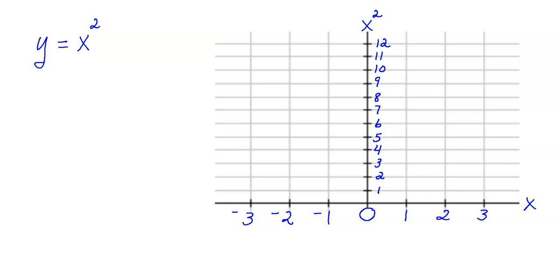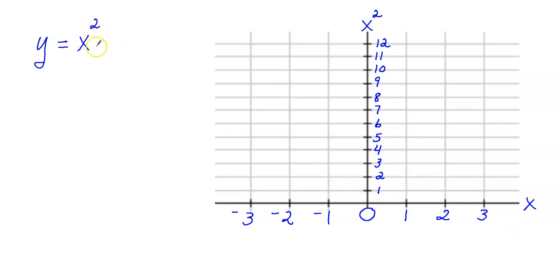In this video we are going to continue to look at the equation y equals x squared. Let's go ahead and make the graph of this. My x values are along the horizontal axis, and we're going to be squaring each x value. So if x is 3, 3 squared is 3 times 3, which is 9.